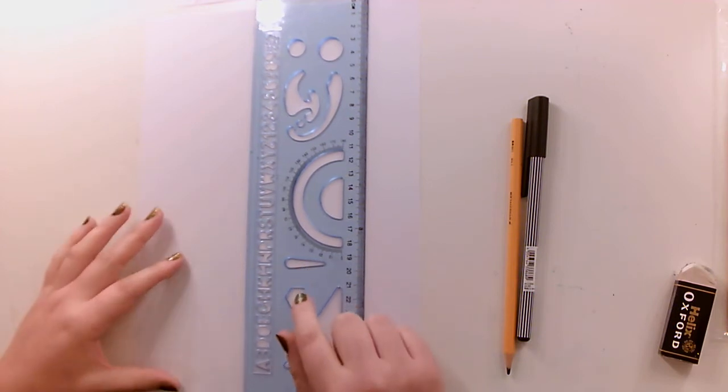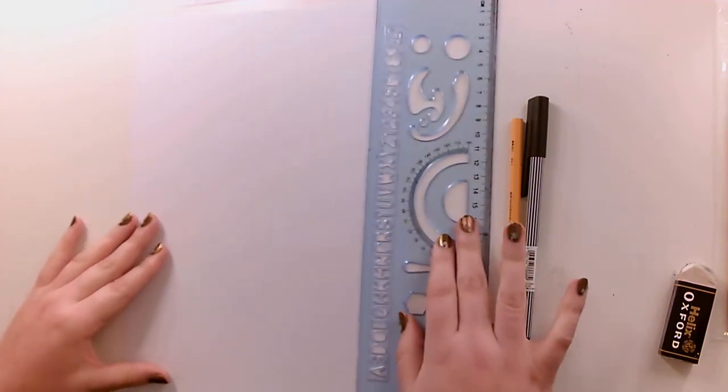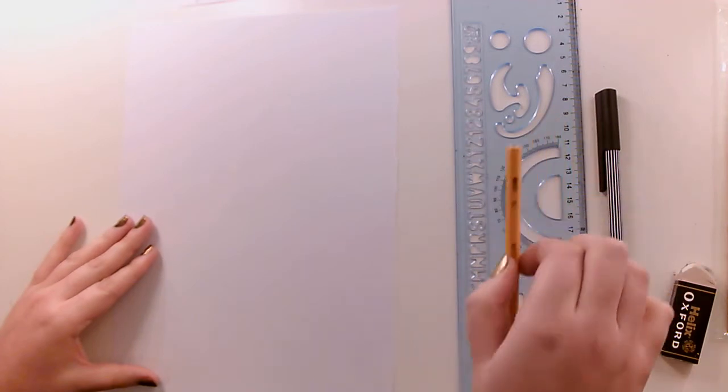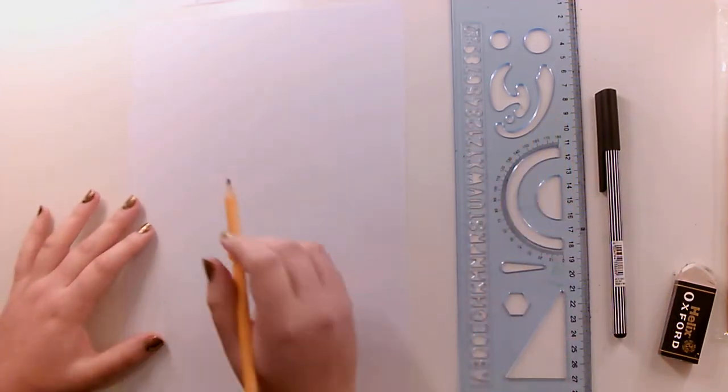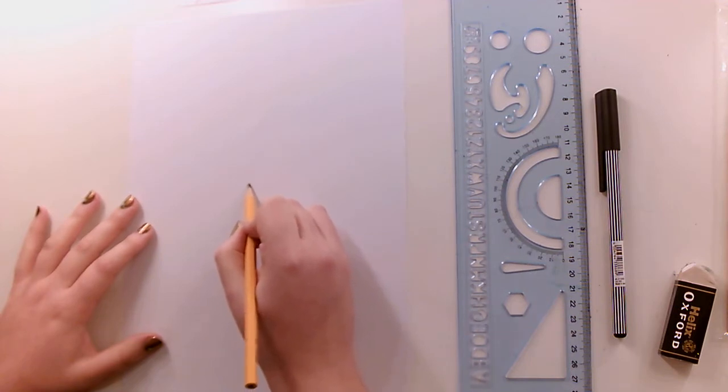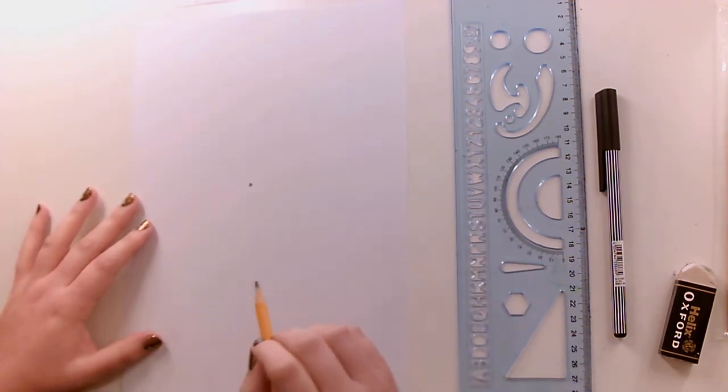Now if you don't have a ruler, just something with a straight edge will do fine. Okay, so we're going to use our knowledge of perspective and we're going to basically create our vanishing point right in the centre of our paper. So that's our vanishing point just now.